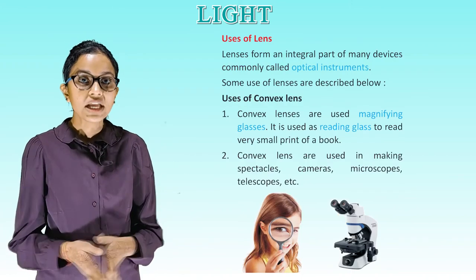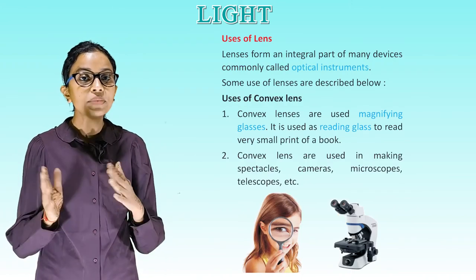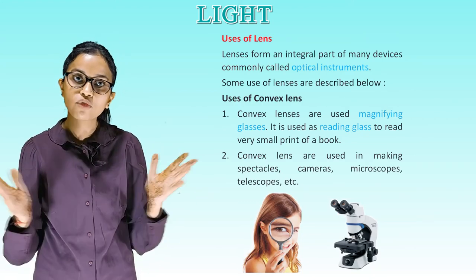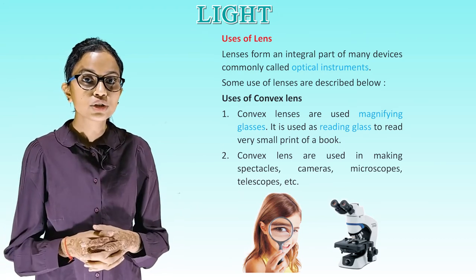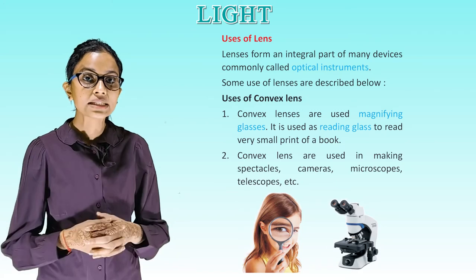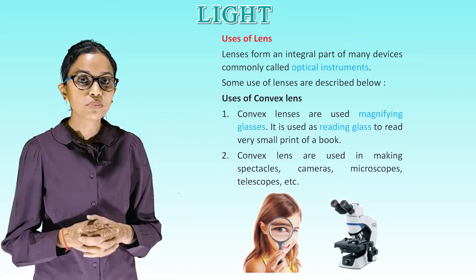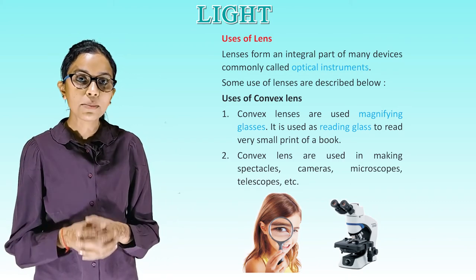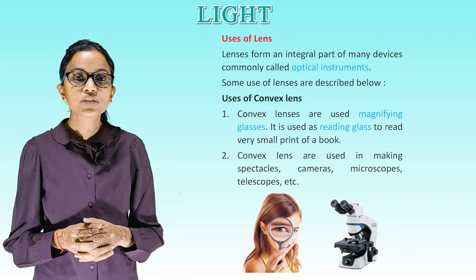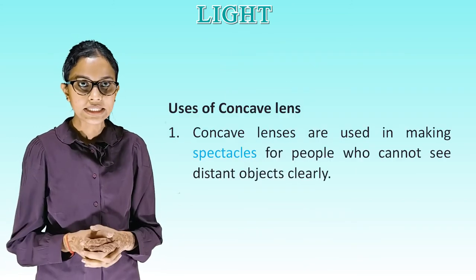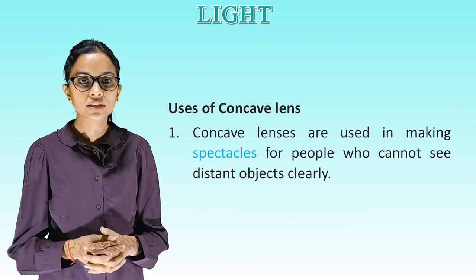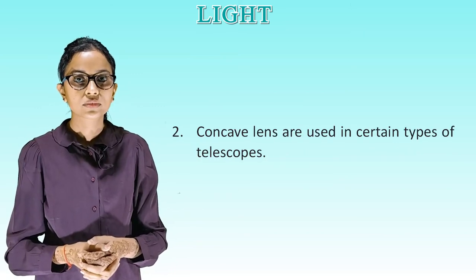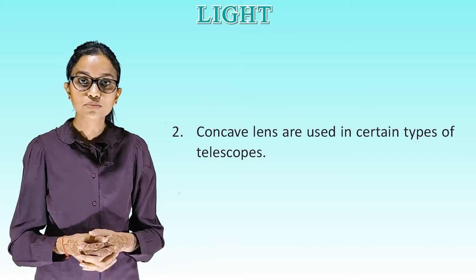Uses of lenses: lenses form an integral part of many devices commonly called optical instruments. Uses of convex lens: convex lenses are used as magnifying glasses and as reading glasses to read very small print. Convex lenses are used in making spectacles, cameras, microscopes, telescopes, etc. Uses of concave lens: concave lenses are used in making spectacles for people who cannot see distant objects clearly. Concave lenses are also used in certain types of telescope.